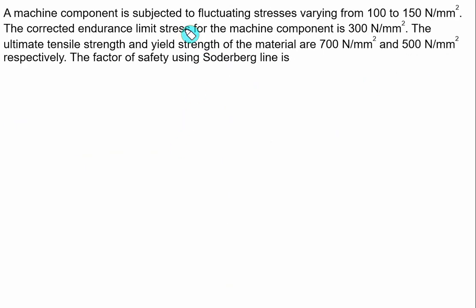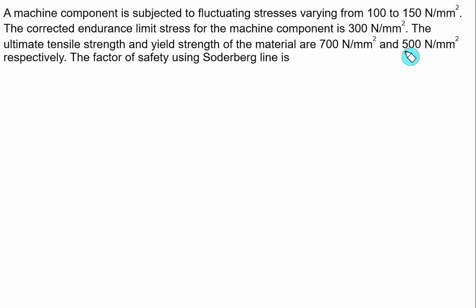A machine component is subjected to fluctuating stresses from 100 to 150 MPa. So sigma max is 150 and sigma minimum is 100. The corrected endurance stress of the component is 300 MPa. The ultimate tensile and yield strengths are given as 700 and 500 MPa respectively. We have to use the Soderberg criteria.